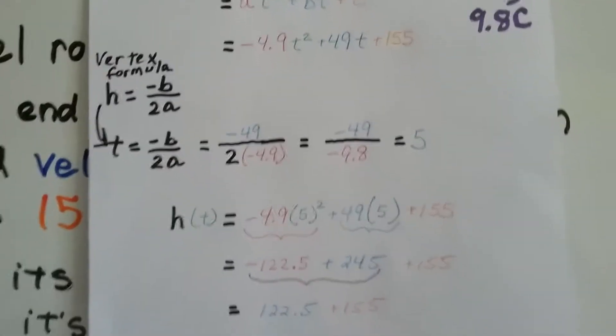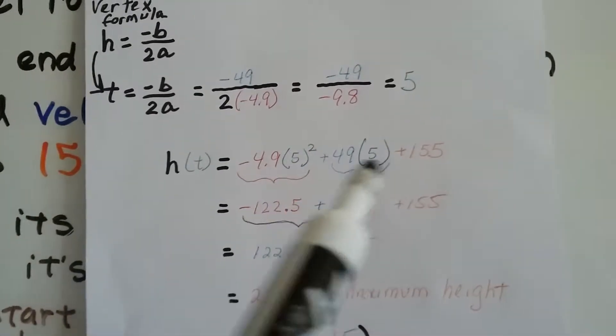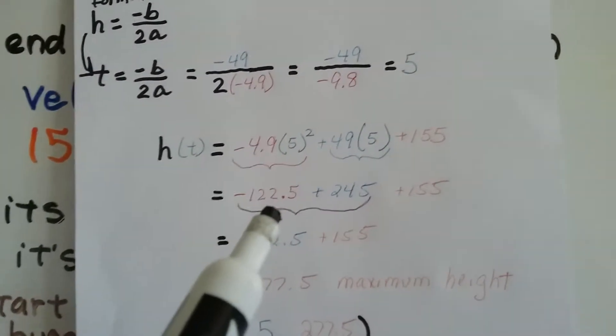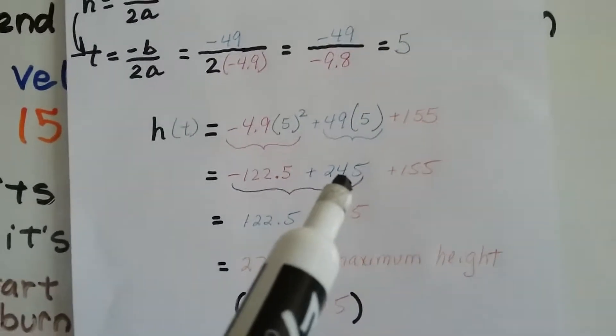We can put the 5 in everywhere that there was a t. We square this and multiply it, and we get a negative 122.5. We multiply these two together and get a 245.